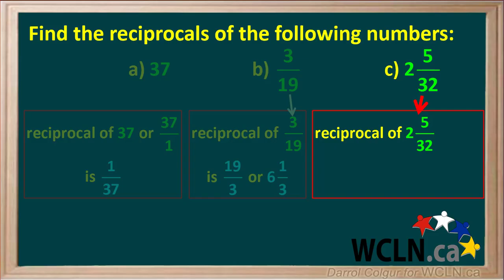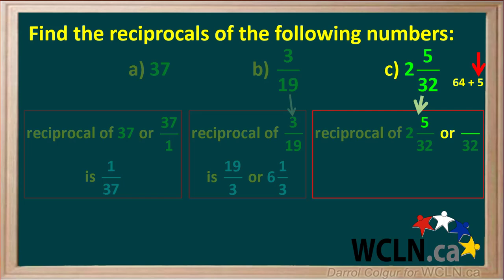Lastly, we need to find the reciprocal of the mixed number 2 and 5/32. Because it's a mixed number, we must convert it to an improper fraction. The denominator is 32, and the numerator is 2 times 32, or 64, plus 5, which equals 69. So the improper fraction is 69/32. To find its reciprocal, we simply flip this fraction to get the final answer, 32/69. Checking, we see that 32 and 69 cannot be divided by the same number other than 1, so we cannot simplify this fraction.